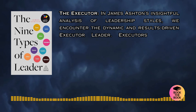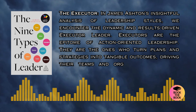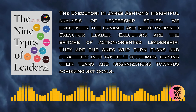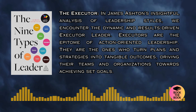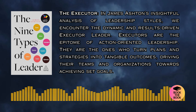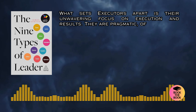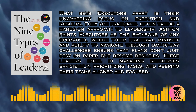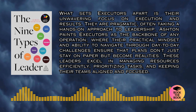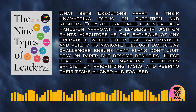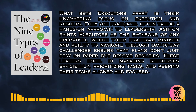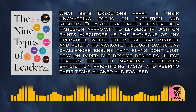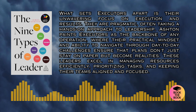In James Ashton's insightful analysis of leadership styles, we encounter the dynamic and results-driven executor leader. Executors are the epitome of action-oriented leadership — the ones who turn plans and strategies into tangible outcomes, driving their teams and organizations towards achieving set goals. What sets executors apart is their unwavering focus on execution and results. Ashton paints executors as the backbone of any operation, where their practical mindset and ability to navigate day-to-day challenges ensure that plans become realities. These leaders excel in managing resources efficiently, prioritizing tasks, and keeping their teams aligned and focused.